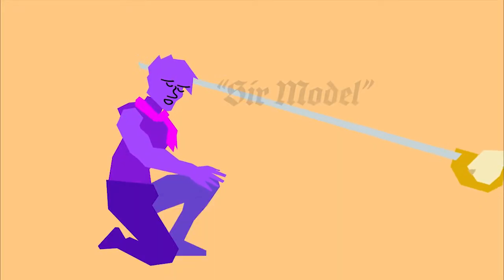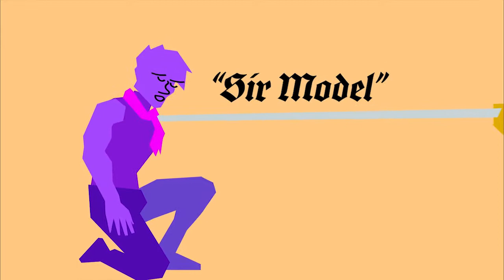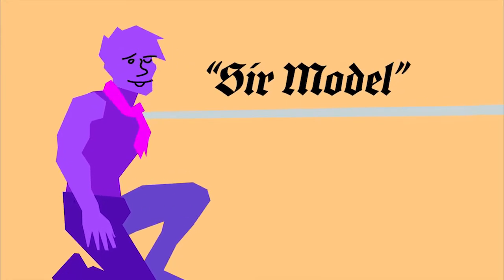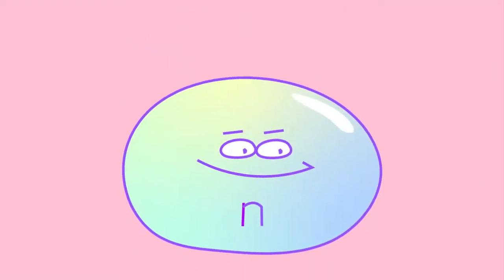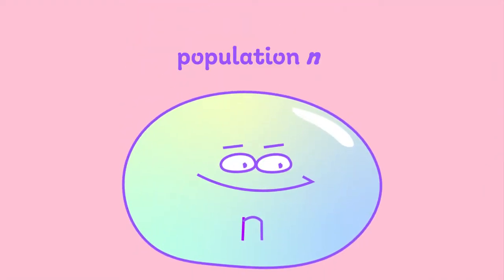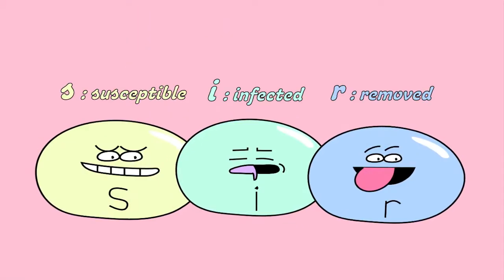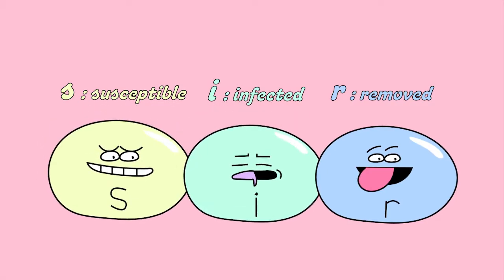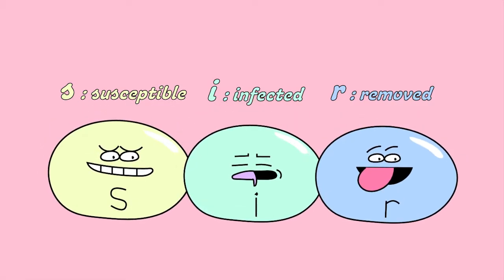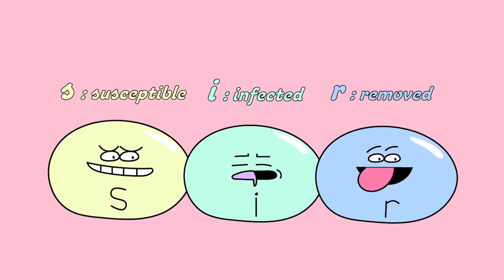Enter the SIR model. The SIR model is a mathematical model used to predict the spread of a pathogen. It divides the population into three parts: S for those susceptible, I for infected, and R for those removed from the system.